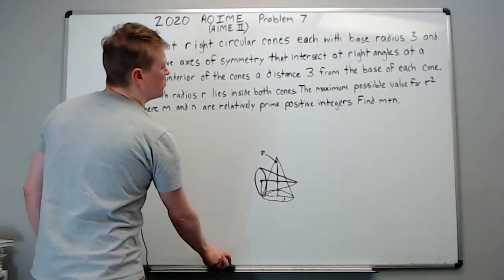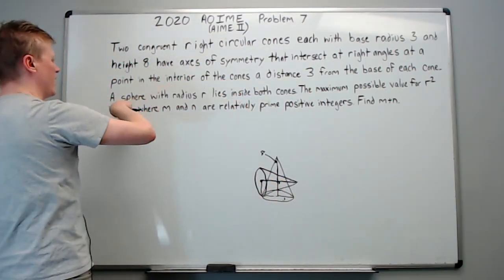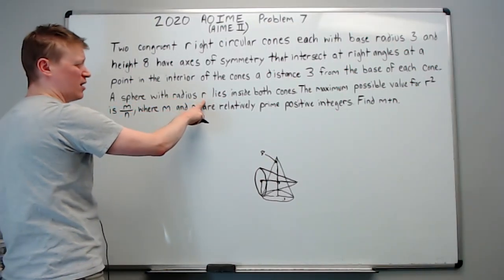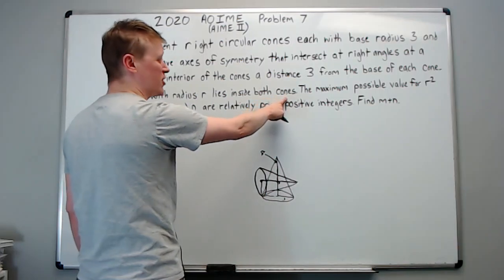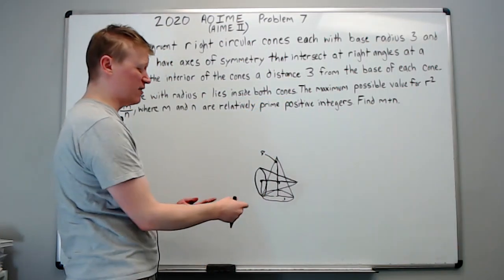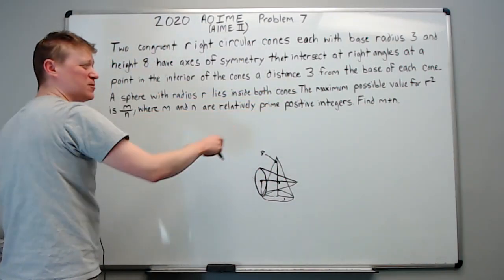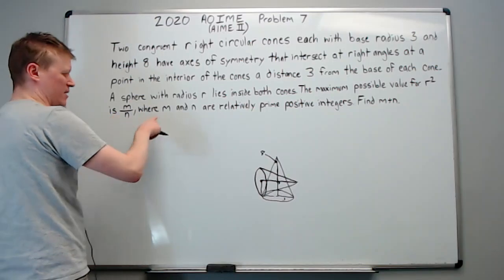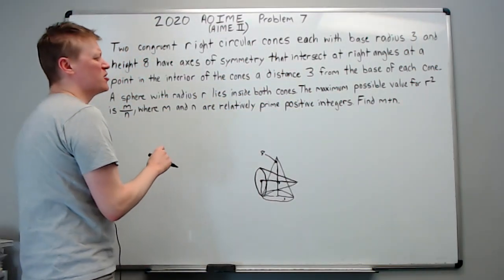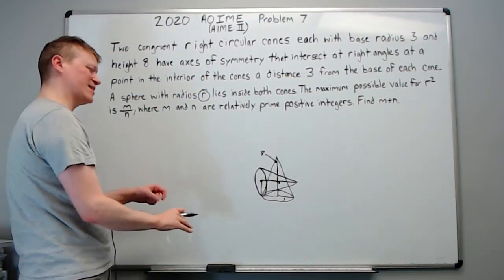A sphere with radius R lies inside both cones. If it wasn't difficult enough, now we're going to throw a sphere in there, and it's somewhere inside both cones. The maximum possible value for R squared is something, and the numbers are relatively prime. Find the sum. So we really just need to know what the radius is of the sphere that fits inside both cones.